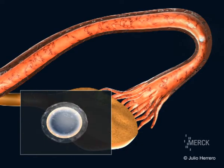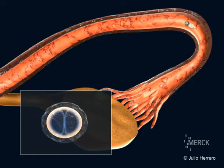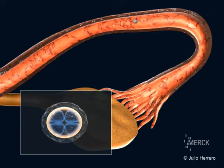One day following fertilization, a cell with two nuclei is observed, at which point it is called an embryo, and it begins to divide itself. Two days after fertilization, the embryo is made up of two to four cells, and moves along the tube in the direction of the uterus.